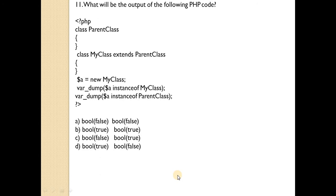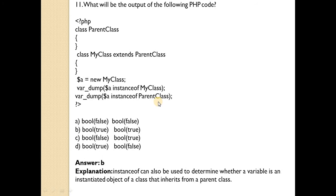What will be the output of the following PHP code? There is one parent class (base class). My class extends the parent class, so my class is the child class. Dollar A is the object of my class. var_dump is used with two statements: dollar A instanceof my class, and dollar A instanceof parent class. Answer is B — bool(true) bool(true). Both statements are true because dollar A is an instance of my class as well as an instance of parent class. The instanceof keyword can also determine whether a variable is an instantiated object of a class that inherits from a parent class.